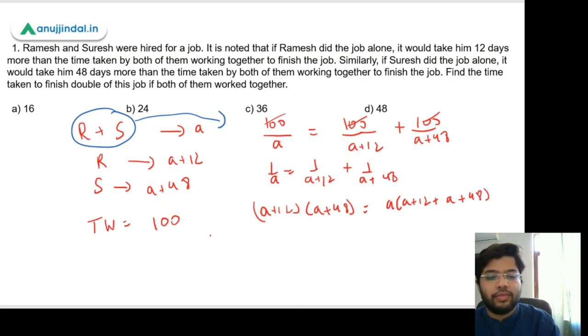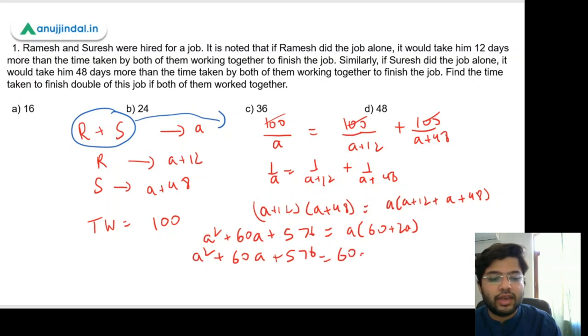Now we can expand this bracket. So what we will get is a² + 60a, and 12 times 48 gives us 576, and here we get a times 60 plus 2a. Further, this can be written as a² + 60a + 576 equals 60a + 2a².